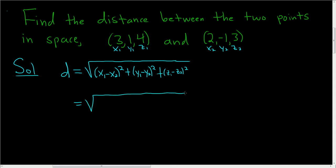A really easy way to remember this formula is you just subtract the x's and square them, subtract the y's and square them, and subtract the z's and then square the result.